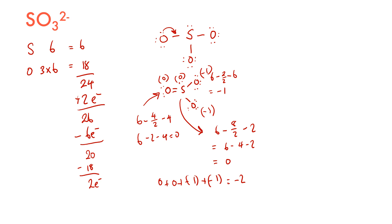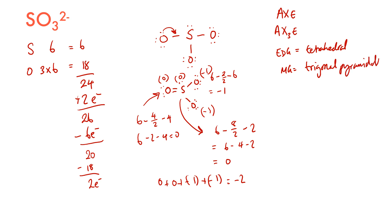Looking at the geometry using VSEPR AXE notation: A is the central atom, we have 3 oxygens and 1 lone pair, giving us AX₃E. This gives an electron domain geometry of tetrahedral, but a molecular geometry of trigonal pyramidal, with bond angles of approximately 109.5 degrees, similar to the tetrahedral molecule methane.